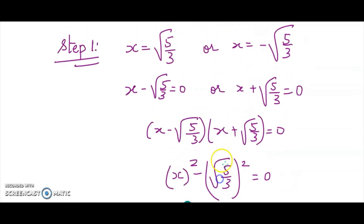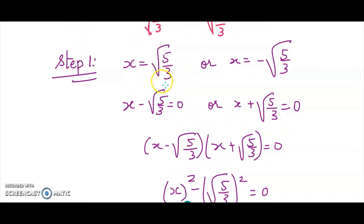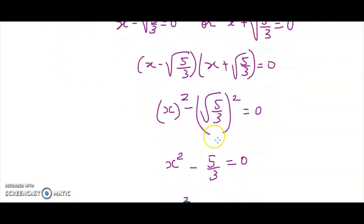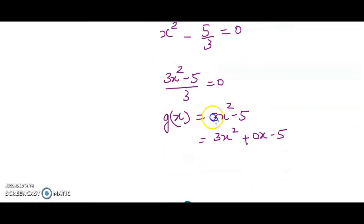To recap step 1: we take x equals root 5 over 3 and x equals minus root 5 over 3, shift the two values to the left to get x minus root 5 over 3 and x plus root 5 over 3, then multiply them. This gives the identity a minus b times a plus b, which becomes x squared minus root 5 over 3 whole squared. The root and square cancel, giving 5 over 3, and after taking the LCM we get our divisor.